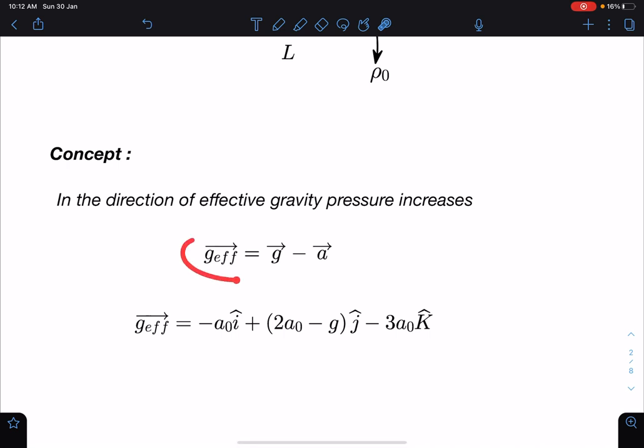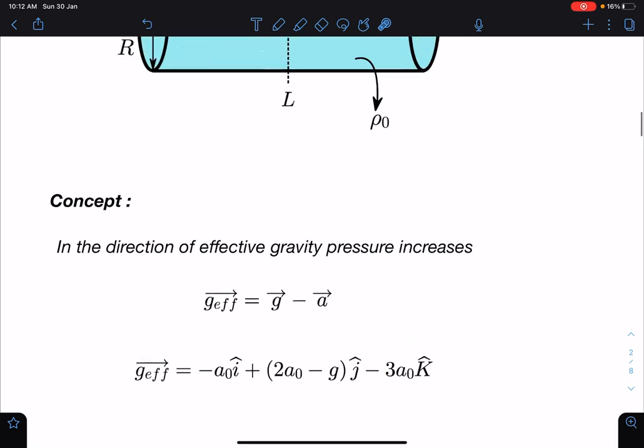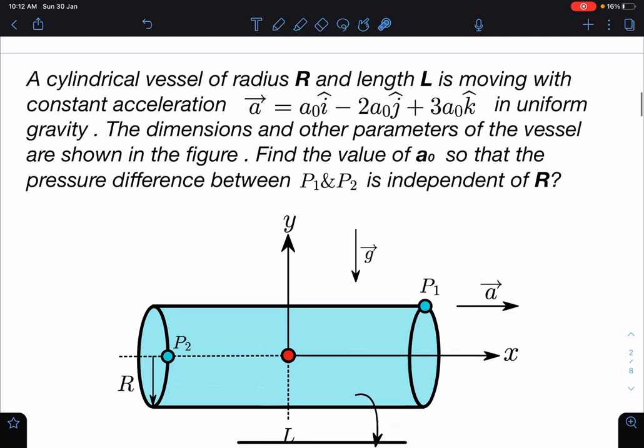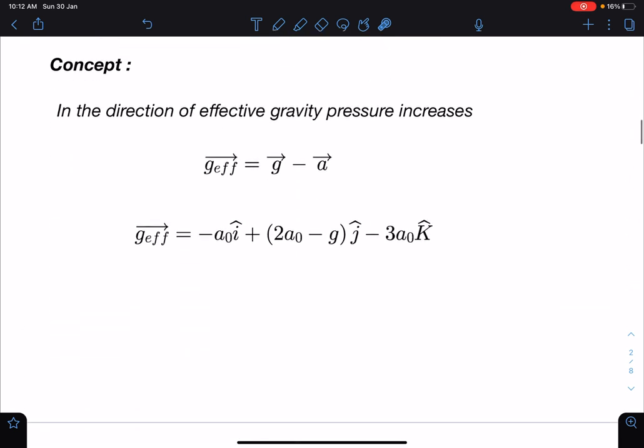So g_effective is defined as vector g minus vector a. So g_effective you can write: -a₀î + (2a₀ - g)ĵ - 3a₀k̂. Basically here, whatever was coming in plus will become minus and minus will become plus. So this is how effective gravity we are going to write.